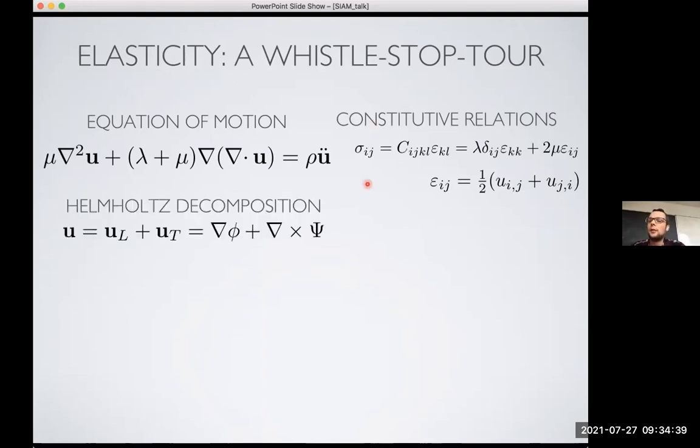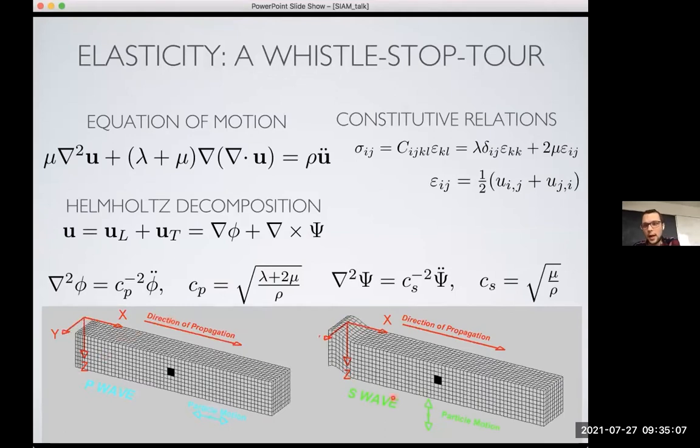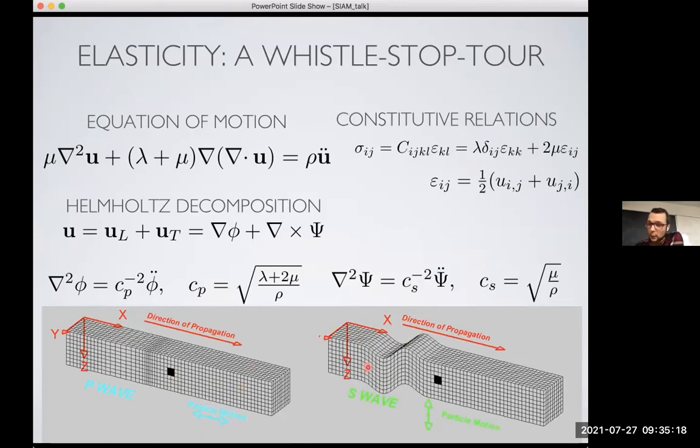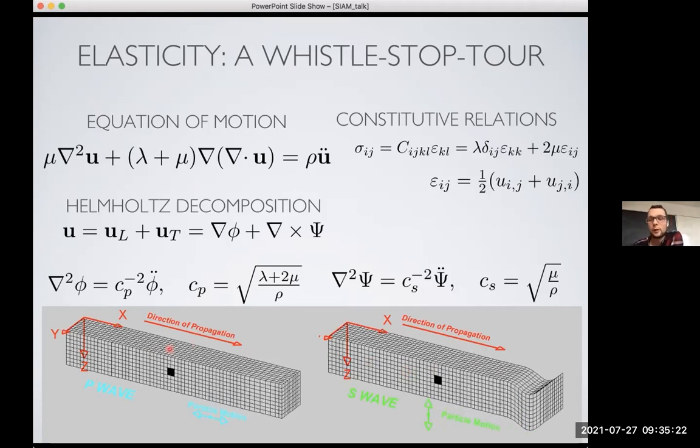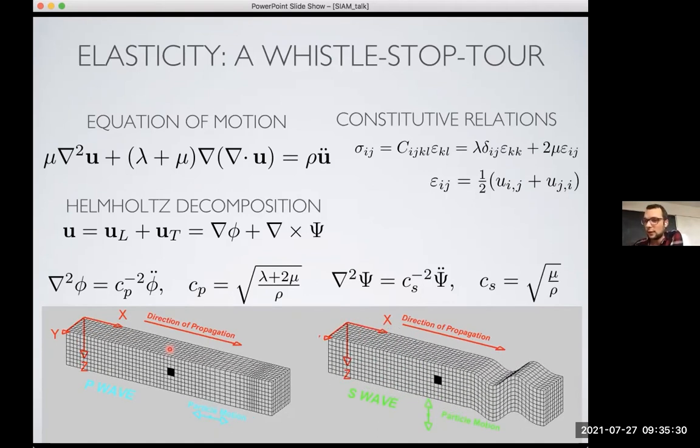And really, what I want to show you is that elasticity diverges quite quickly from electromagnetism. And you can see this when you split up your displacement field into a longitudinal and a transverse component. If you substitute this back into your equation of motion, what you end up with is two wave equations. So there are two types of waves in an elastic body. And the main difference between this and electromagnetism is that these wave equations travel with different speeds. And these correspond to compressional P waves and shear S waves. So the compressional P waves is like a classical acoustic sound wave. It's a pressure wave where the particle motion is parallel to the direction of propagation, whereas the S wave, it's transverse to the direction of propagation. And P waves travel faster than shear waves.